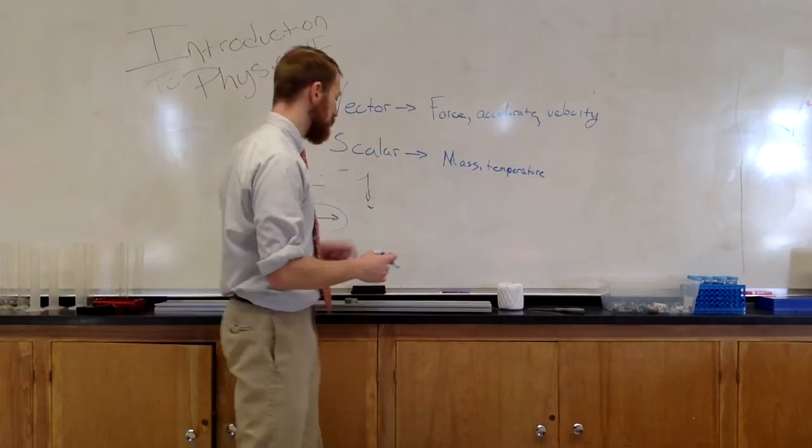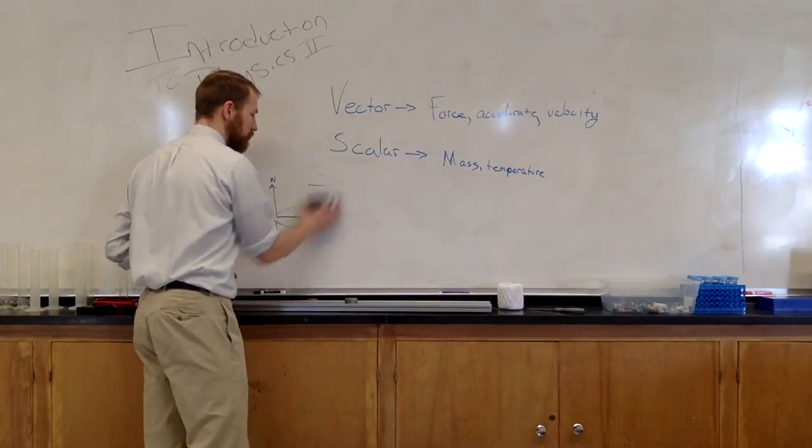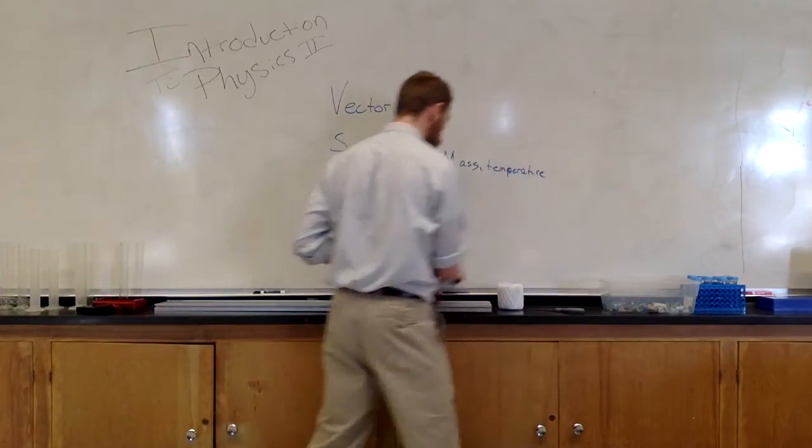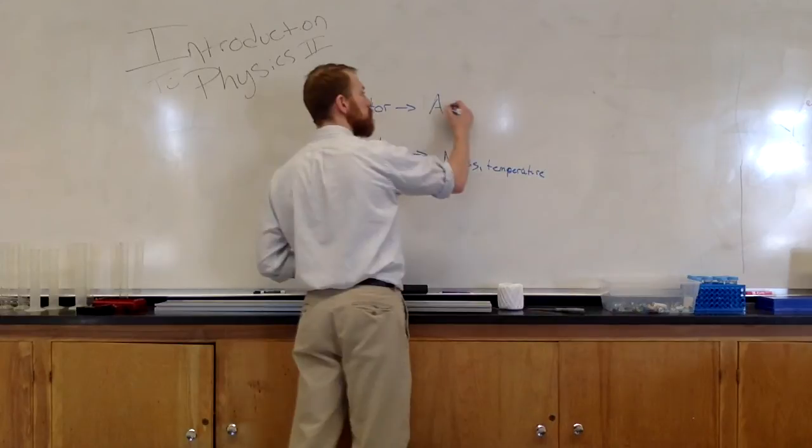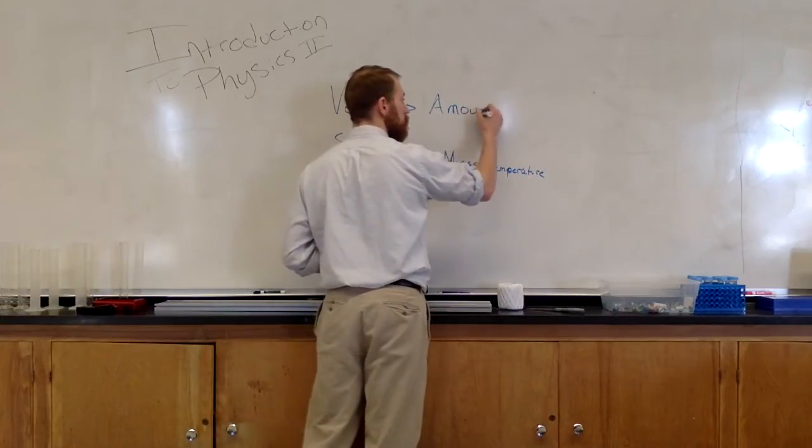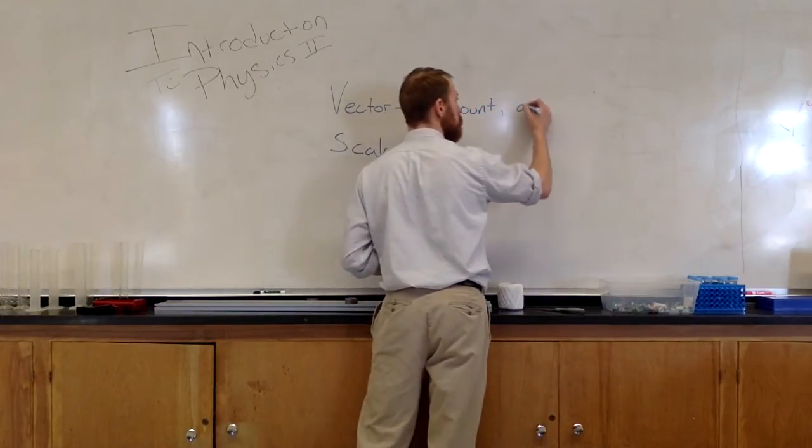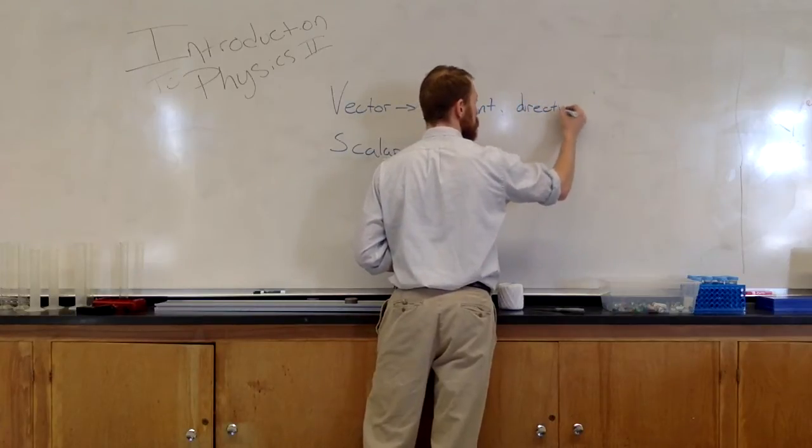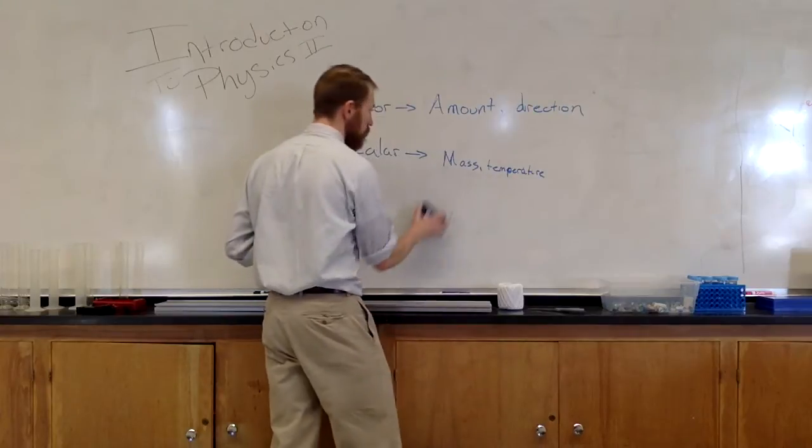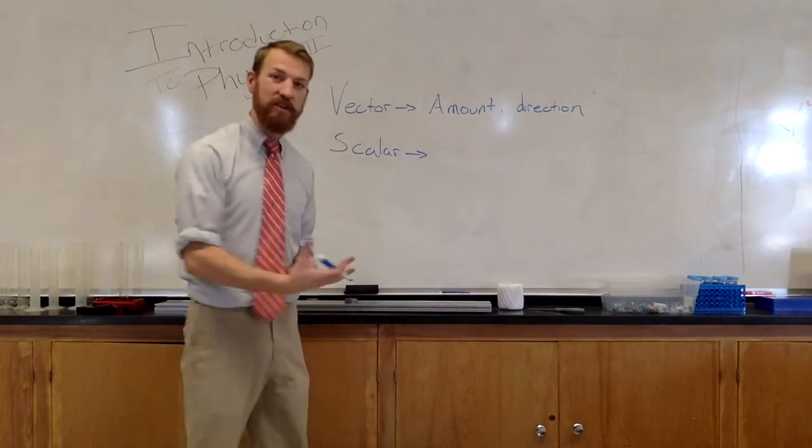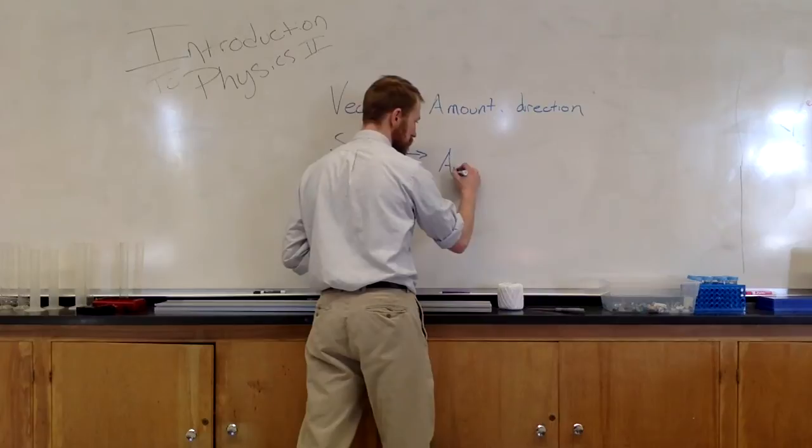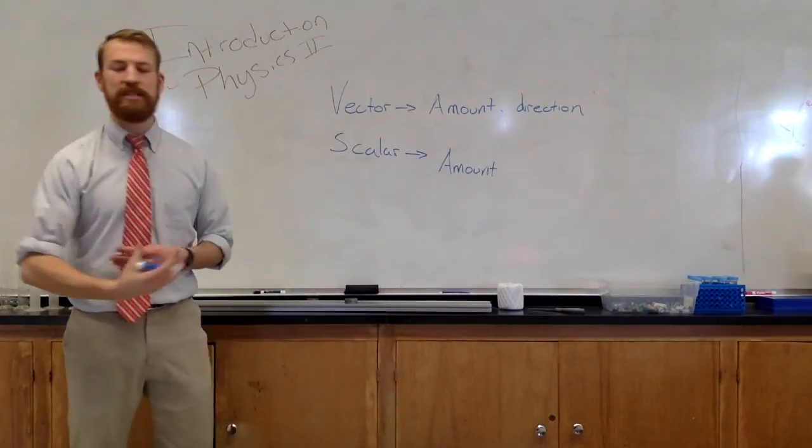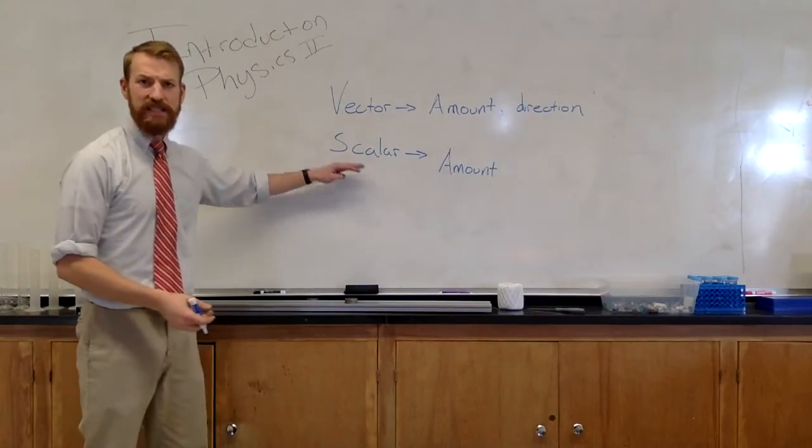So vector quantities, and if I were going to write a definition for vector quantities, I would say it's something that has an amount and a direction. Whereas something that is a scalar quantity only has an amount. This is the difference between vectors and scalar quantities.